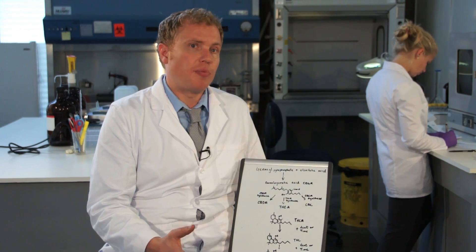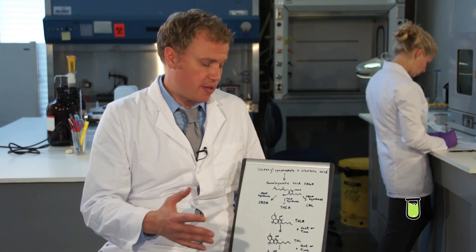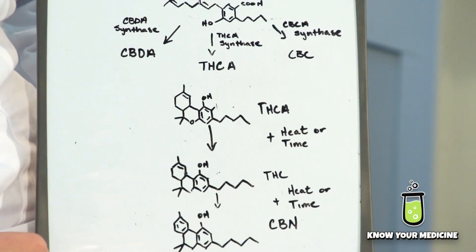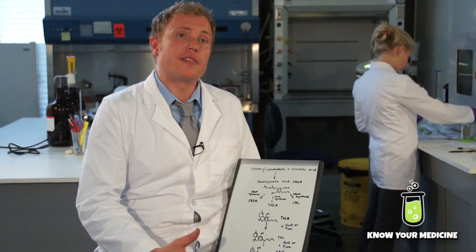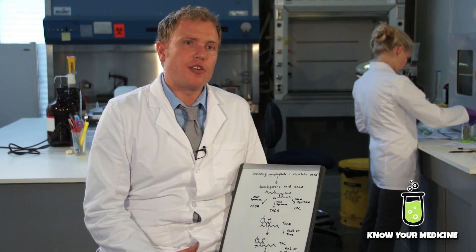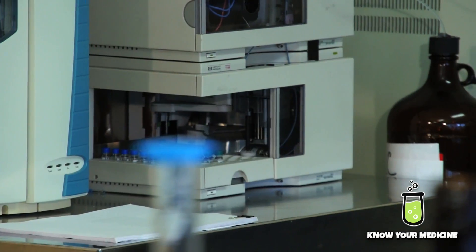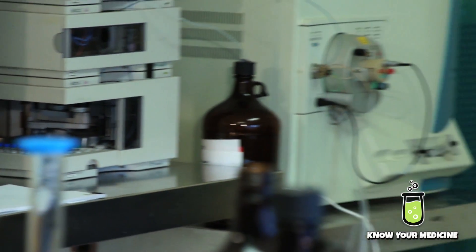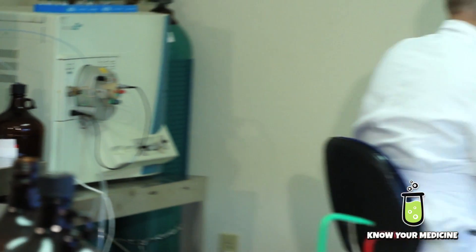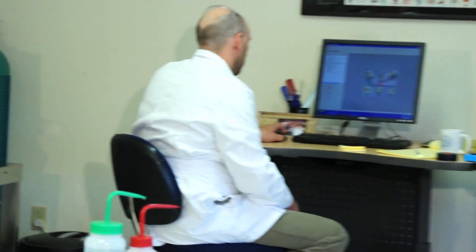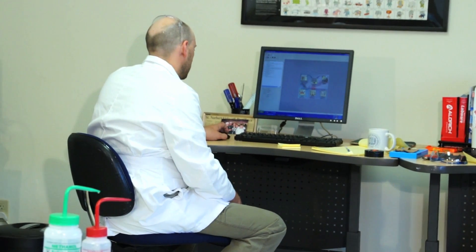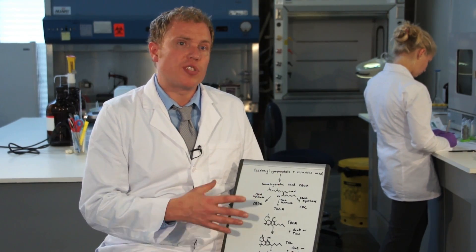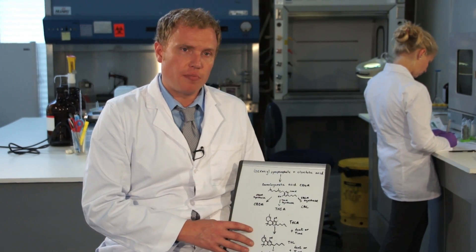Is that elevated CBN actually in the plant? No — it's a function of the heating process of the GC. Since THC and CBD are degraded with heat, that's why we test for all of our cannabinoids with an HPLC at SC Labs, to get a more accurate and precise measurement of what's actually found in the plant.